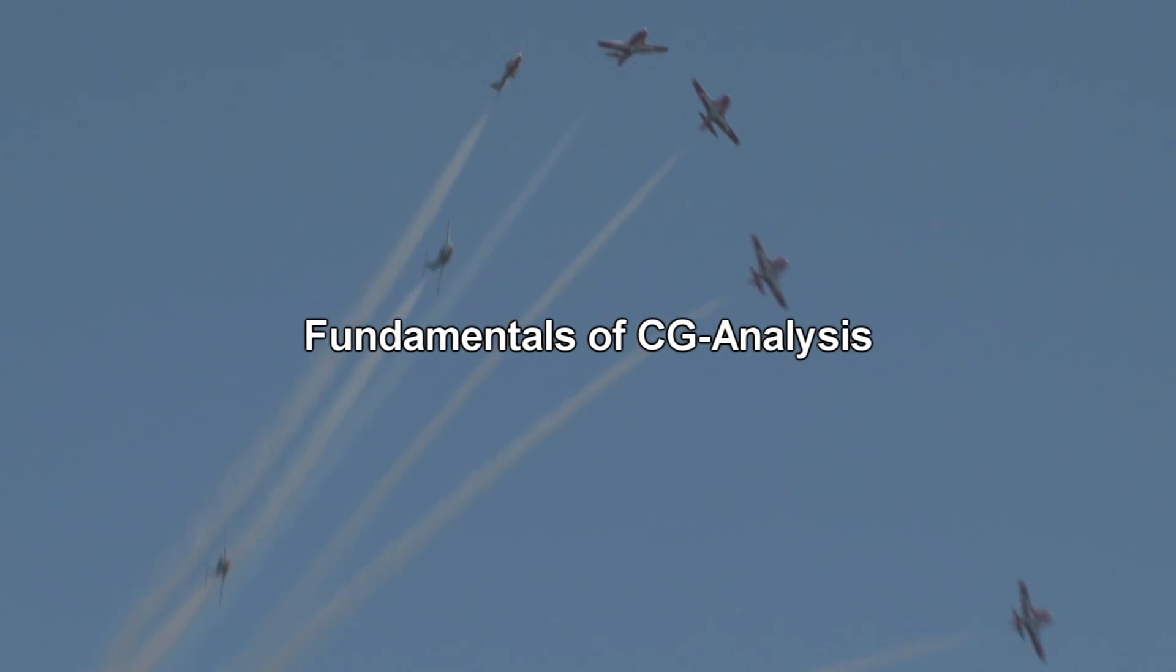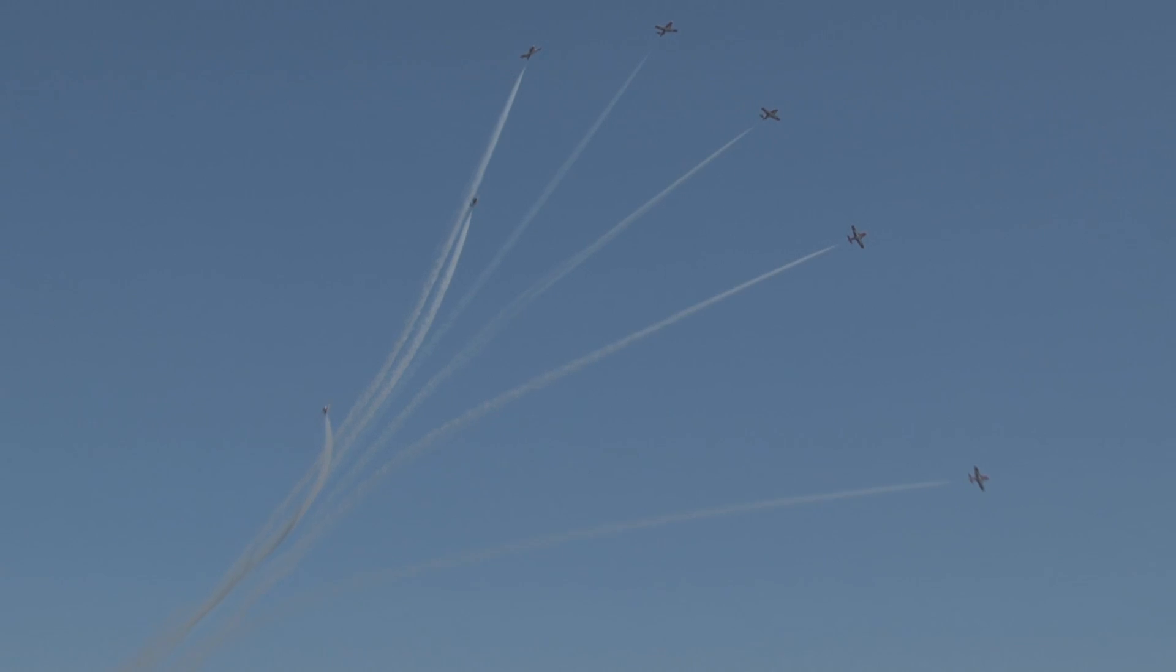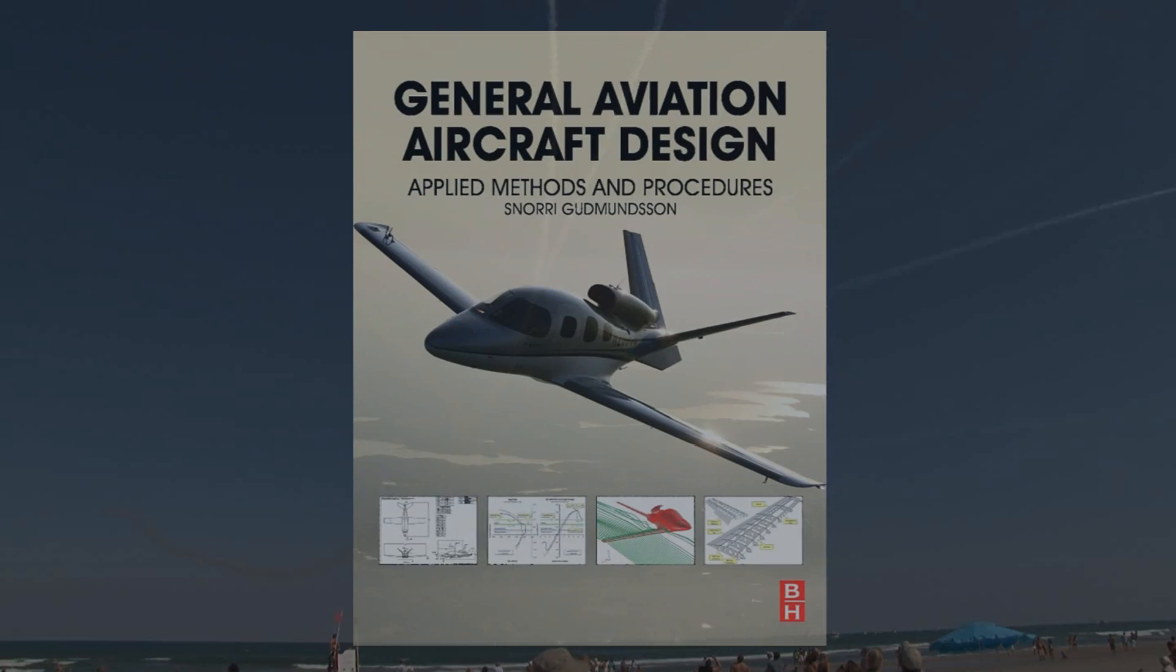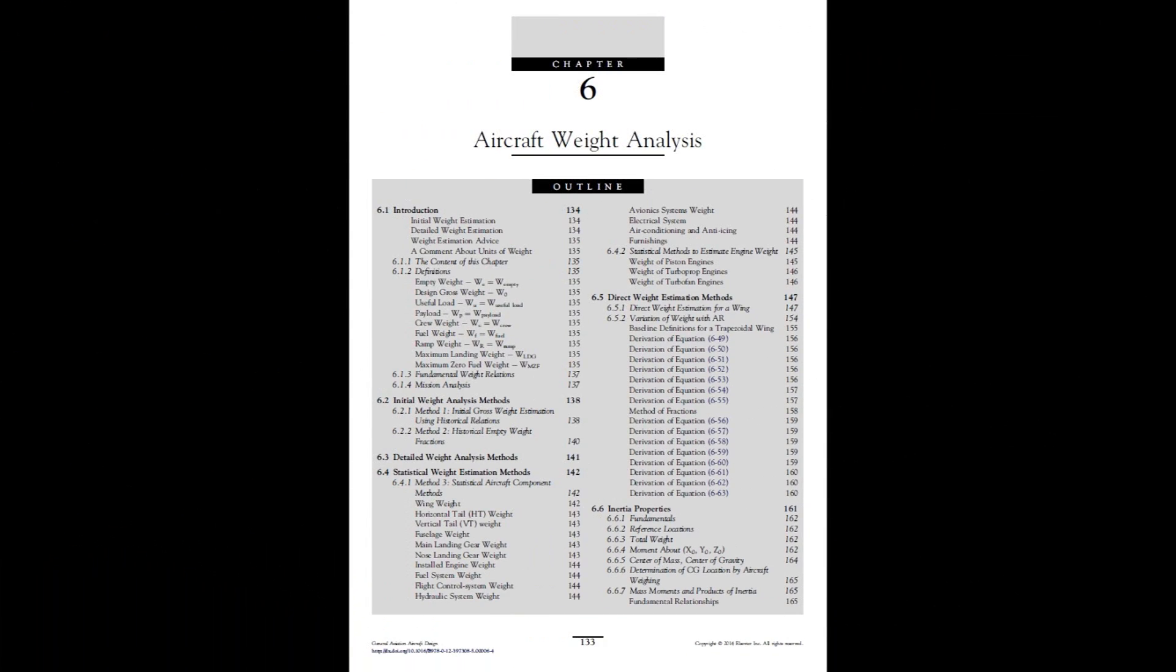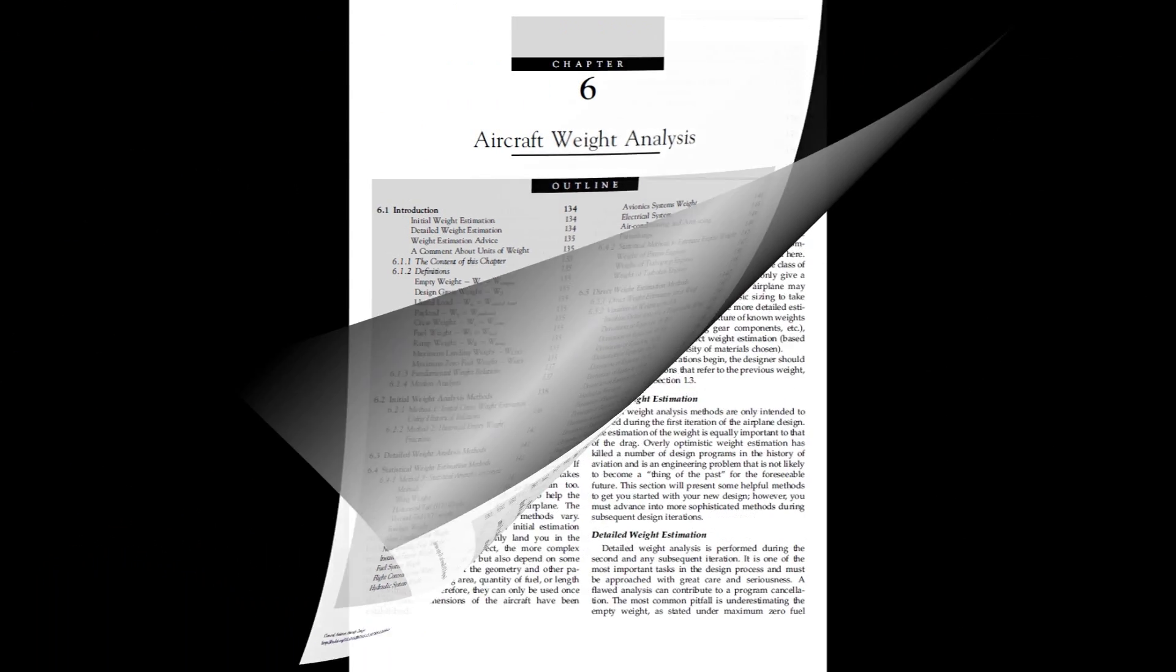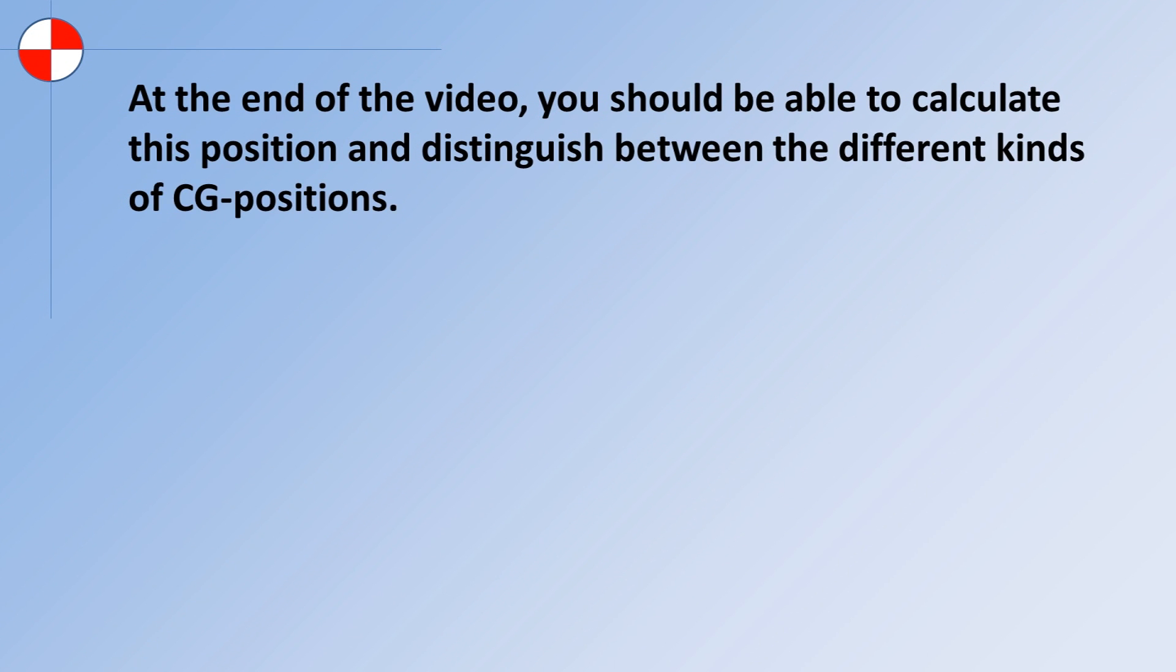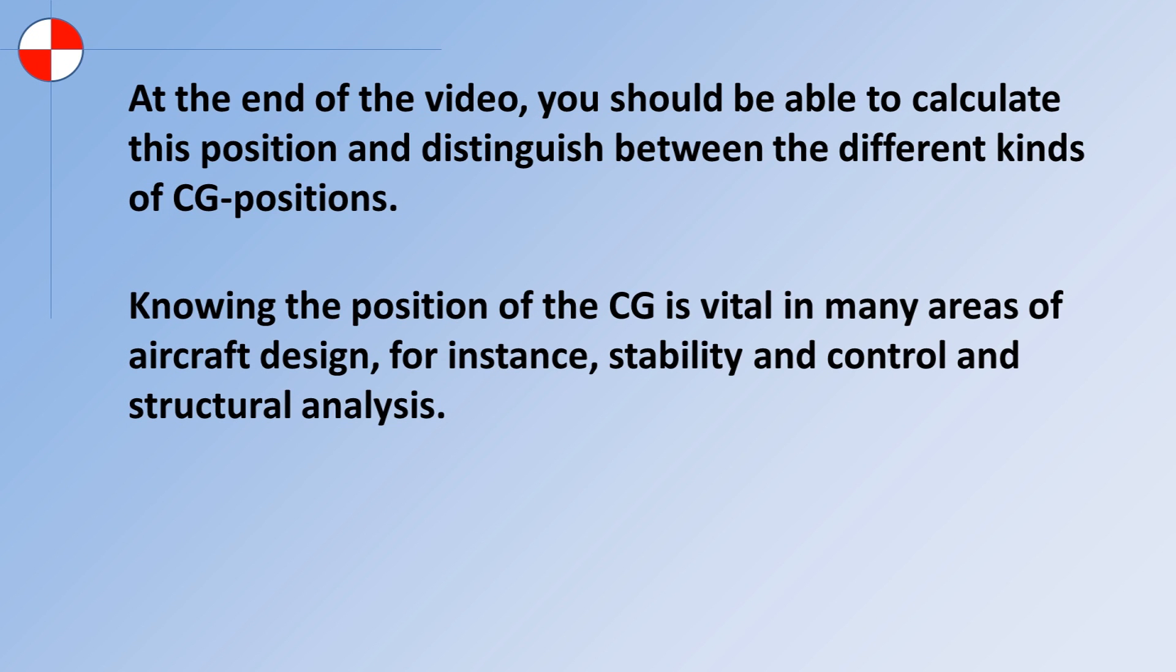This video will show you how to calculate the position of your aircraft's center of gravity, often just called the CG. The material presented is detailed in chapter 6 in my book. Note that I will use the term CG frequently, and when I do, I am referring to the position of the center of gravity of the aircraft in three dimensional space. At the end of the video, you should be able to calculate this position, and distinguish between the different kinds of CG positions. Knowing the position of the CG is vital in many areas of aircraft design, for instance stability and control, and structure analysis. Let's begin by reviewing a few definitions.